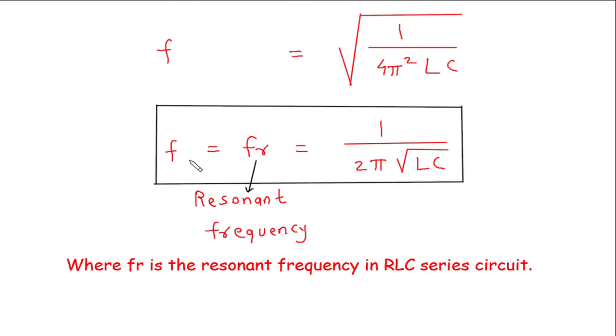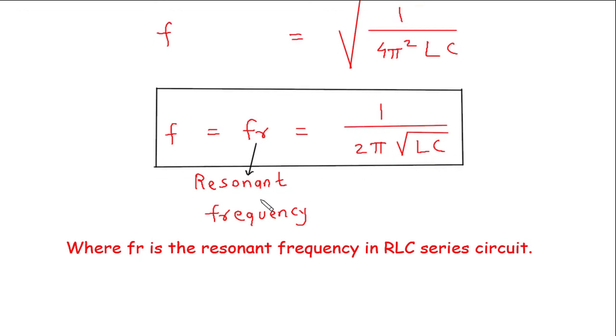So this F is the resonant frequency. F is equal to the resonant frequency, let's say this is FR. So FR is equal to 1 upon 2π square root of LC, where FR is the resonant frequency in RLC series circuit.